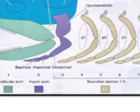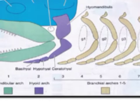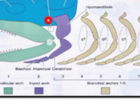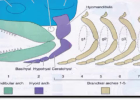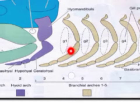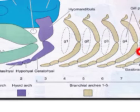These are the visceral arches. In Pisces, they form the jaw bones and the supporting bones which support the jaw bones. The gill system — the gill slits — also forms the gills.